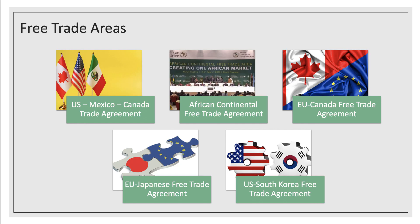What are some examples of free trade areas? The revised trade agreement between the United States, Mexico, and Canada is one. The African Continental Free Trade Agreement involves more than 50 African countries. The recently signed EU-Canada free trade agreement and likewise the one between the European Union and Japan. The United States recently signed a free trade agreement with South Korea. These are good examples of both bilateral and multilateral free trade agreements.